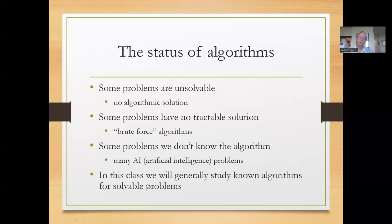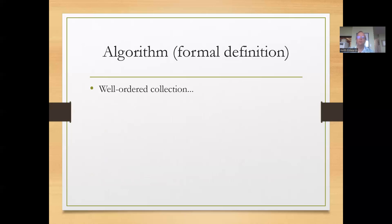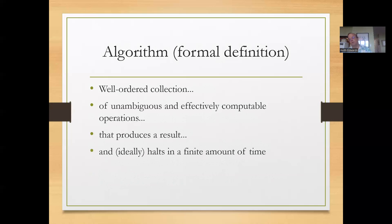So the good news is, in this class, it's an introductory class, we're going to study algorithms that are known and therefore solvable problems. So we can worry about these a bit later in your study of computer science. But for right now, we'll stick with some of the pretty easy things. So a formal definition of an algorithm is a well-ordered collection of unambiguous and effectively computable instructions that produce a result and halt in a finite amount of time.